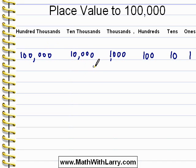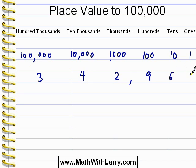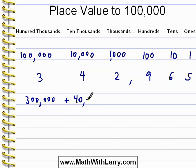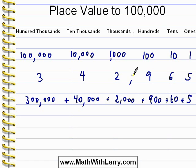So this just allows us to figure out the value of a number. For example, if I have the number 342,965, all this really means is 300,000 plus 40,000 plus 2,000 plus 900 plus 60 plus 5. And of course, we would read that as 342,965.